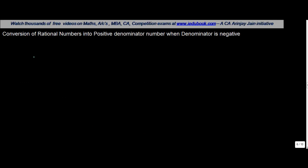Many times you might come across situations where you will have certain rational numbers. Let's say for example you get 6 upon minus 7, or 7 upon minus 13, or 8 upon minus 12, or 3 upon minus 13.